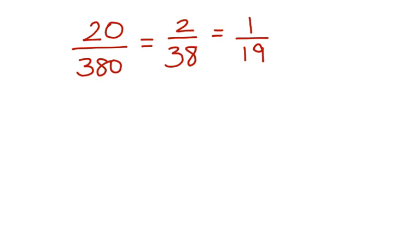Now, 20 out of 380, that can be simplified. And we can have 2 out of 38, which simplifies again to 1 out of 19. This is the probability of the compound event.